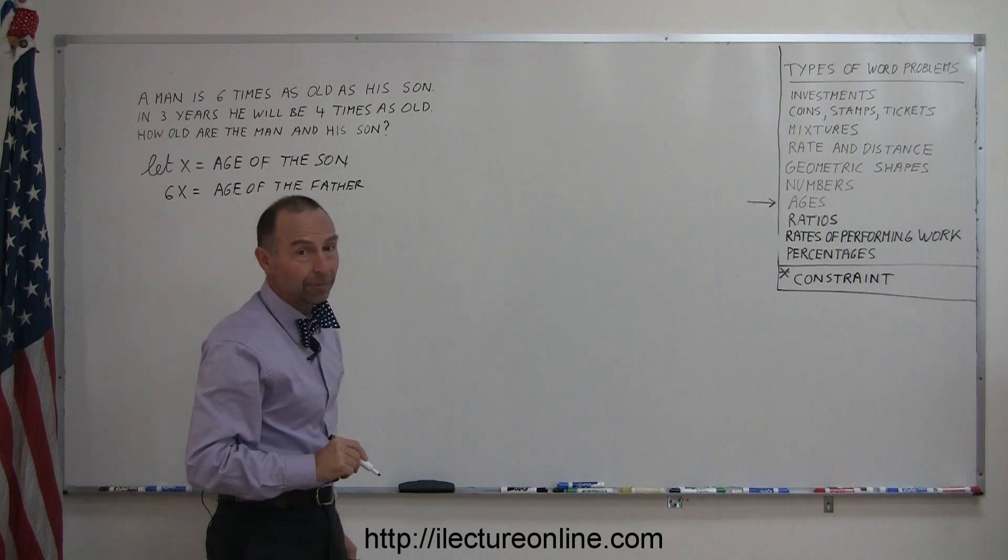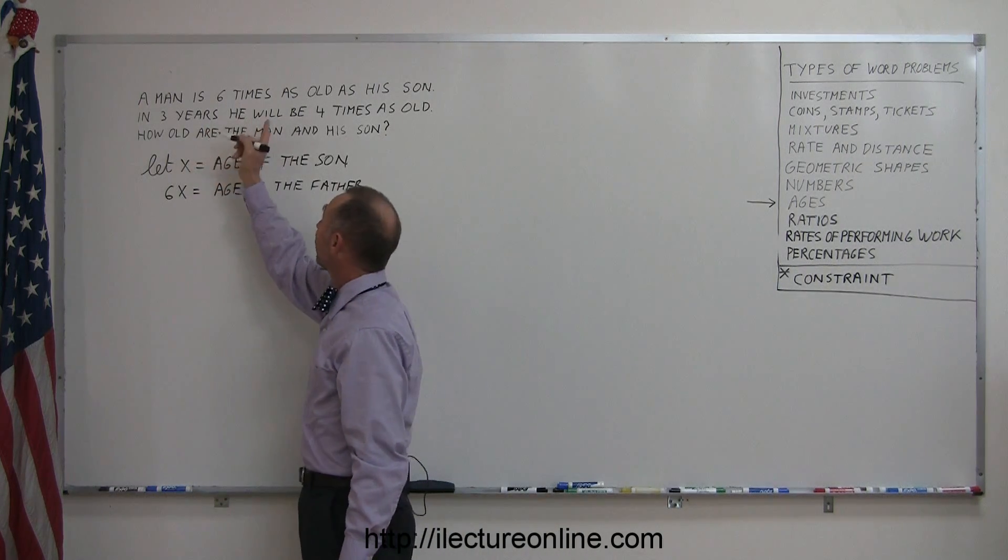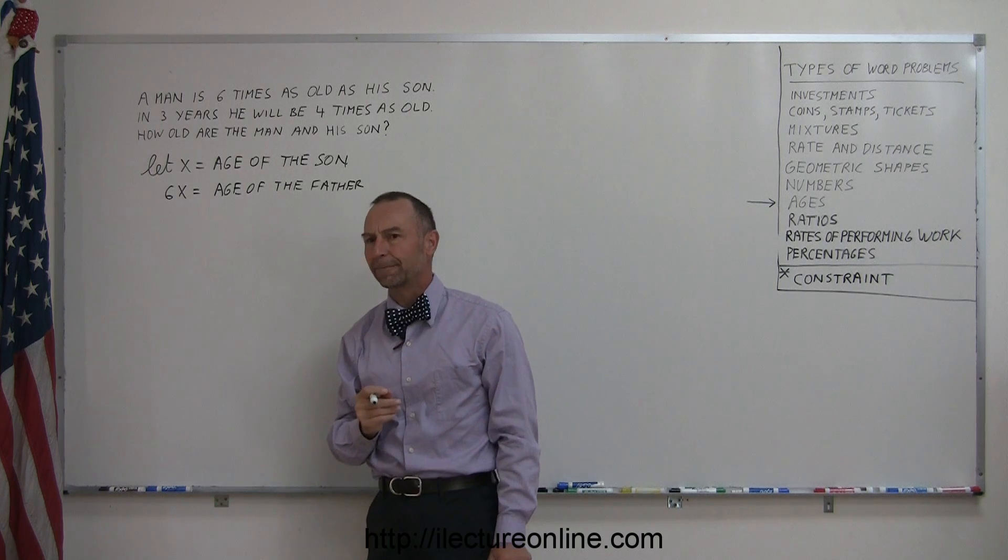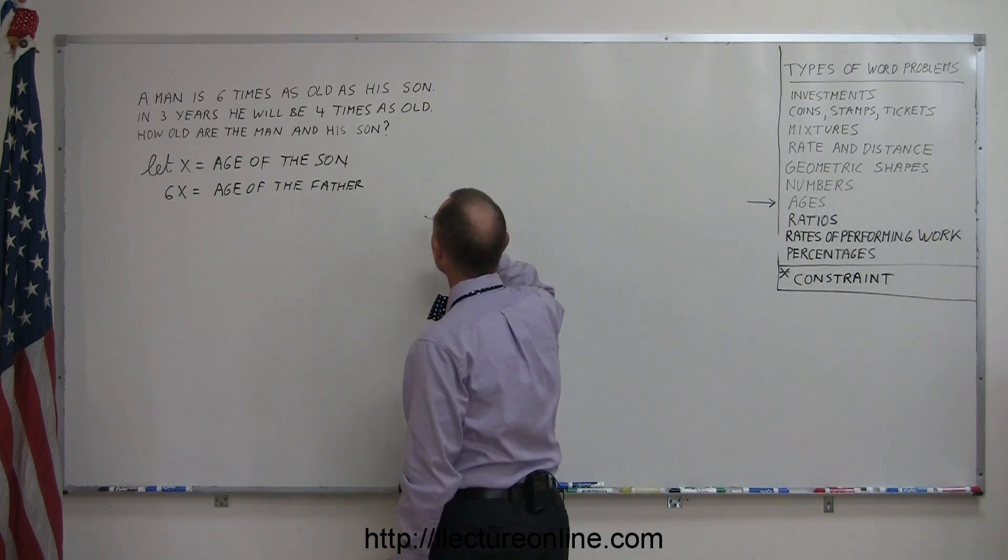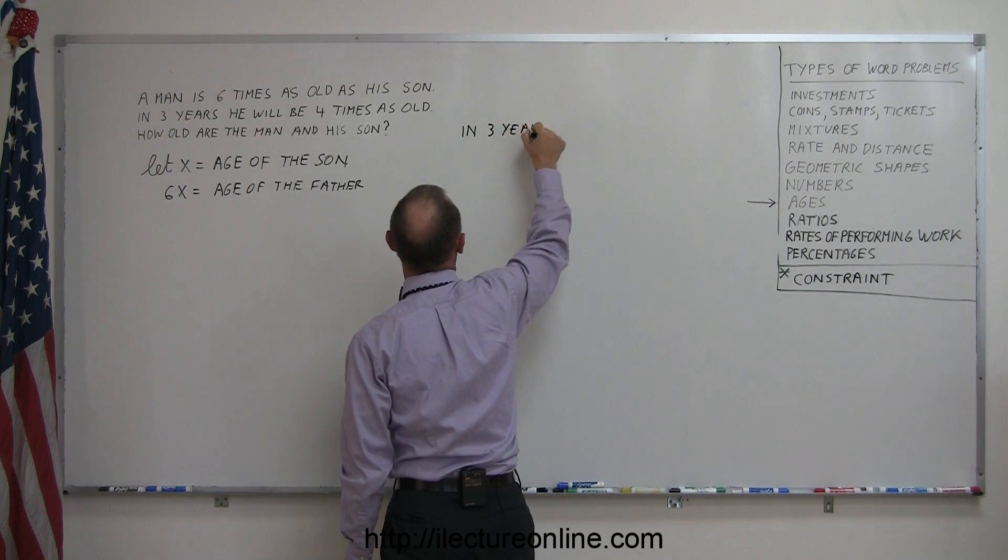Now we're not ready yet to solve the problem, but we have some more information. It says in three years he will be four times as old as the son. We want to express their ages in three years in terms of x.